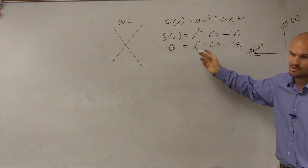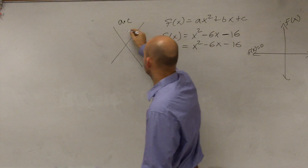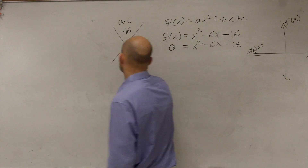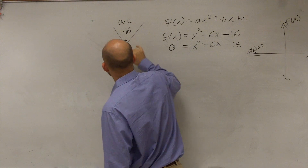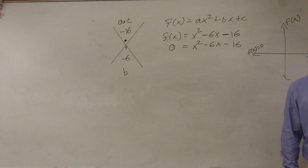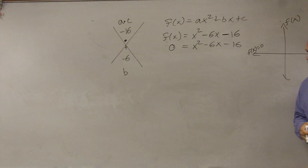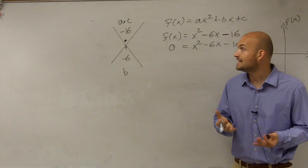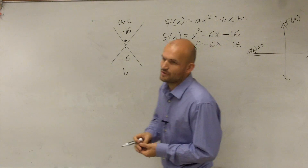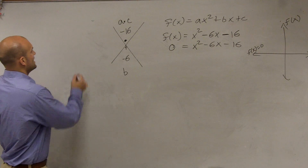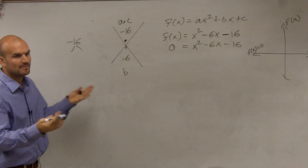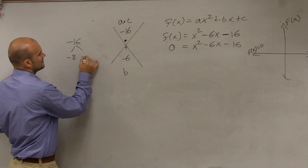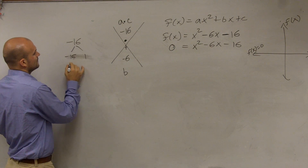Whenever you have your a as one, it's pretty basic — one times negative 16 is negative 16. Then you take your b and put it on the bottom; in this case, b is negative 6. I like to put a dot and a plus sign: the dot up top means multiply, and the plus means add. So I need to find two numbers that multiply to give me negative 16 but add to give me negative 6. We draw those numbers from the factors of negative 16, because factors are two numbers that multiply.